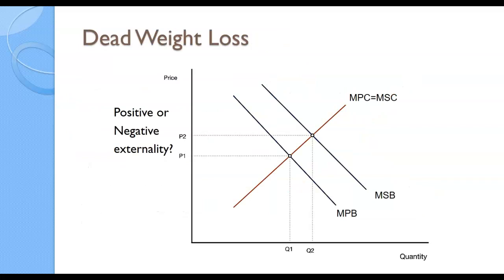At QM we have the private cost, and then we add on the external cost to put on the MSC. Then we get deadweight loss, which we've talked about before. The market wants to be at MSC equals MSB, or Q2, but the market is currently at MPB equals MPC, so we're at Q1. This is a positive externality — how do I know? The easiest way is we want more stuff to be produced: we want Q2, and you typically want more of a good thing. For a negative externality, you're going to want less. The deadweight loss represents the inefficiency of not being at the socially optimum output.